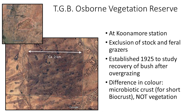This is Kunamur Vegetation Reserve. It's an area two by two kilometers at Kunamur Station, and it has been fenced off to grazing almost a hundred years ago. University has been studying this site since then, and one of the really interesting things is that you can see the reserve in Google Earth.